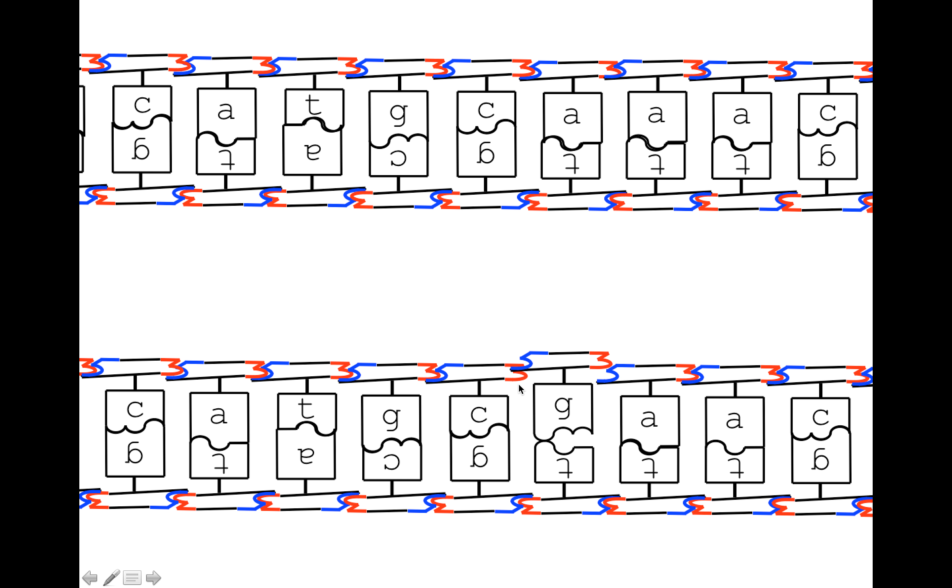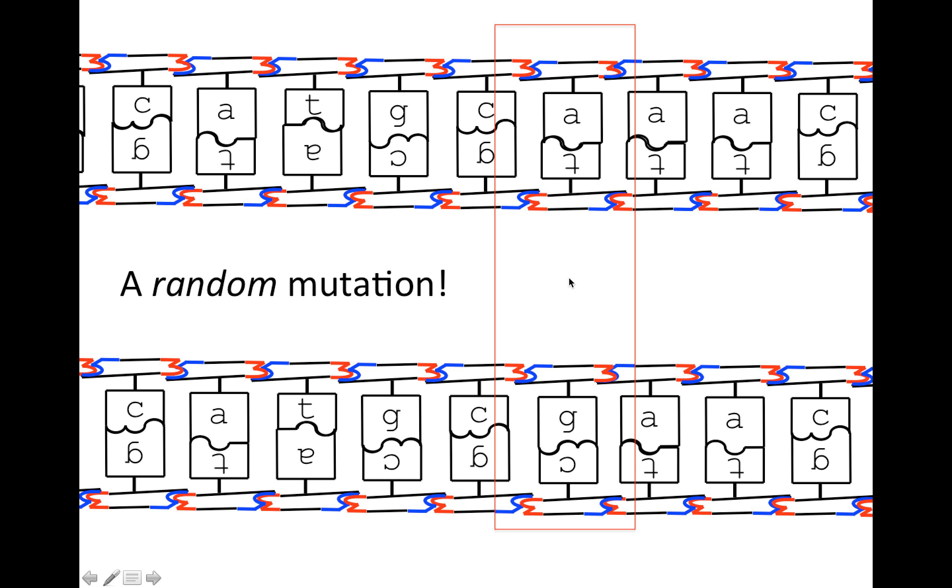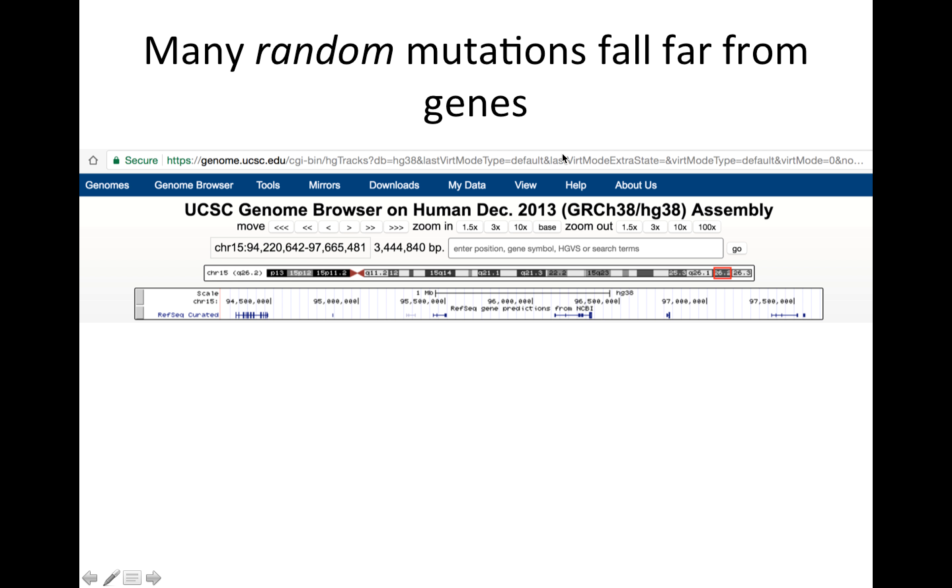So this error, right now, it's a mismatched base pair. And so what can happen is this will get corrected, and it could get corrected in either direction. But if it gets corrected in the direction of keeping the G and getting the C to complement the G, then what we have is a new mutation here. It's a new random mutation that's due to a mistake. This mutation did not occur because it will have some phenotypic impact. It's a random mutation during replication. And so now this has given us two alleles. This is what we mean when we say we have multiple alleles. We have multiple differences due to mutations.